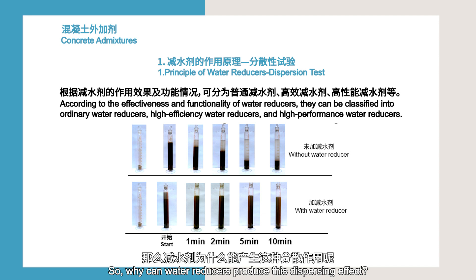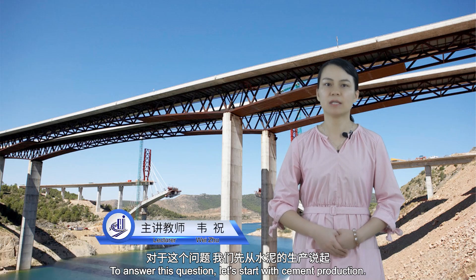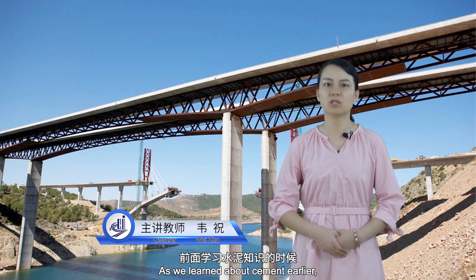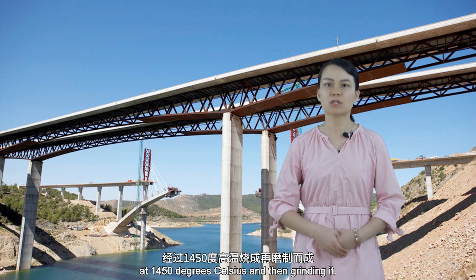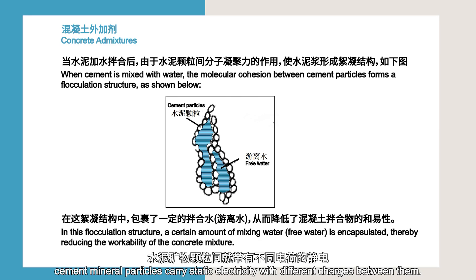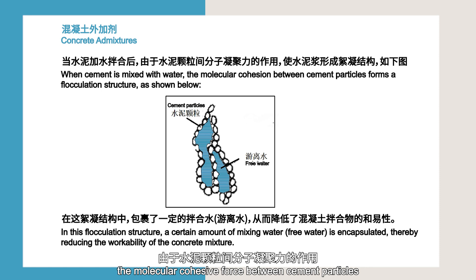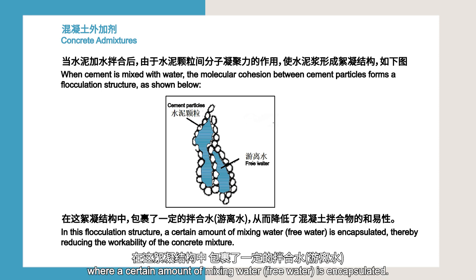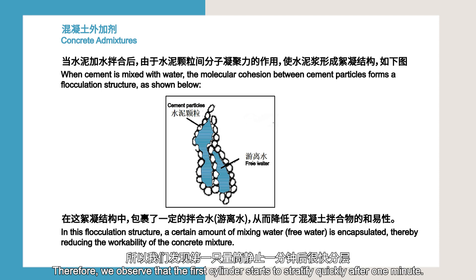Why can water reducers produce this dispersing effect? Let's start with cement production. Cement is produced by burning cement clinker at 1450 degrees Celsius and then grinding it. Therefore, cement mineral particles carry static electricity with different charges between them. When cement is mixed with water, the molecular cohesive force between cement particles causes the formation of a flocculated structure where a certain amount of mixing water, or free water, is encapsulated. This reduces the workability of the concrete mixture, which is why the first cylinder starts to stratify quickly after one minute.